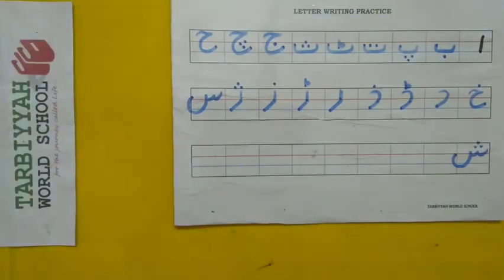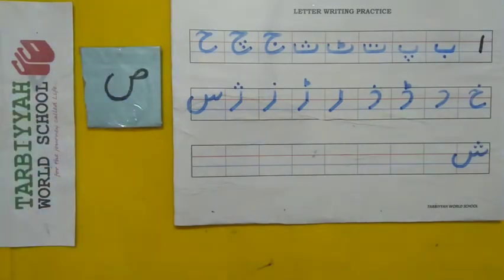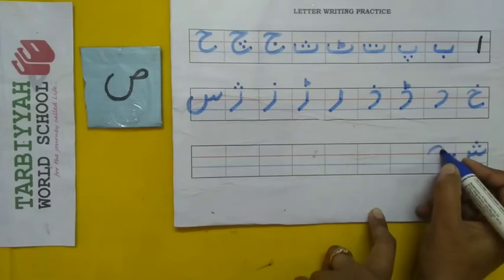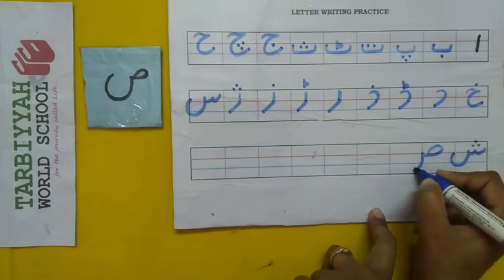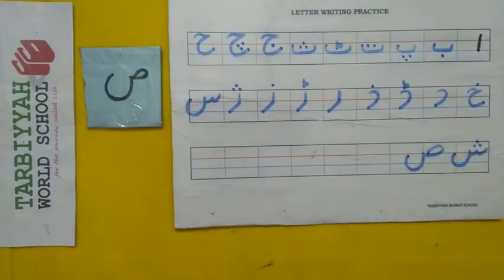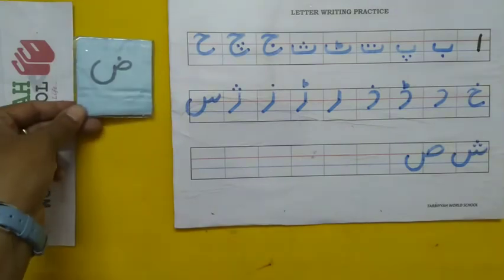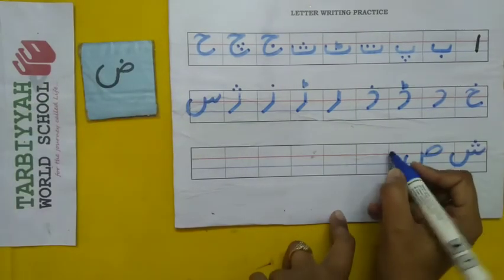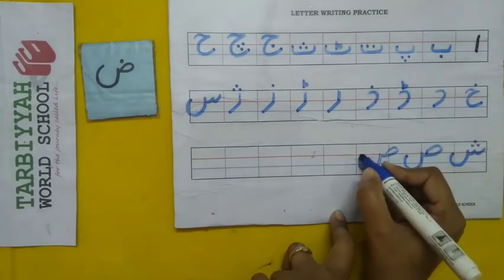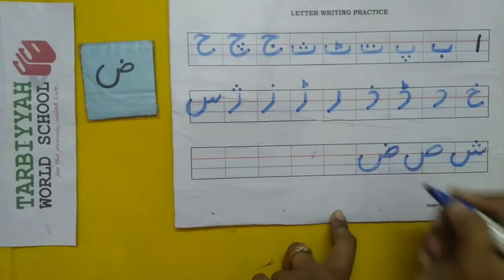Children, the next letter — yes, the next letter is Swad. So how do we write Swad? Like this. And after Swad? Zwaad. So how do we write Zwaad? Same shape as Swad — Swad is empty, Zwaad has one dot on top. Like this.